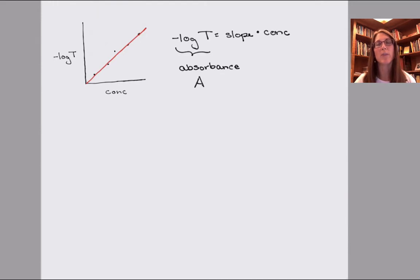So we have absorbance, and this is equal to the slope times the concentration. Well, that slope has some pieces to it. That slope reflects both how much the light interacts with the molecule and the thickness of the liquid through which it's traveling or of the material through which it's traveling.